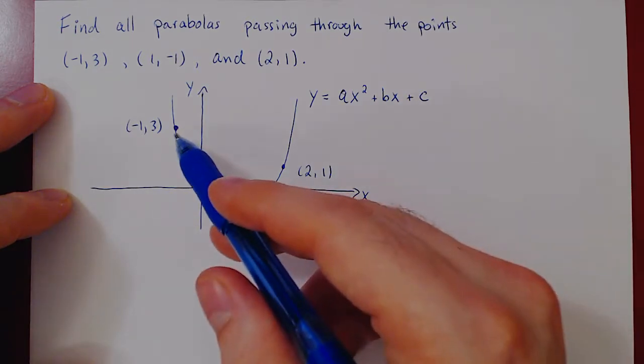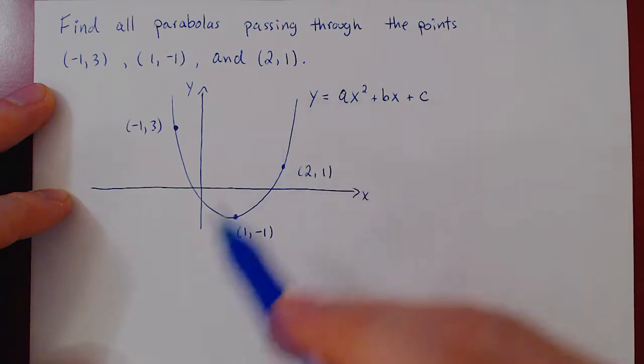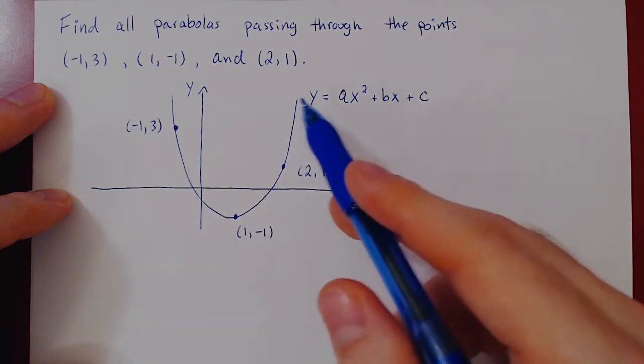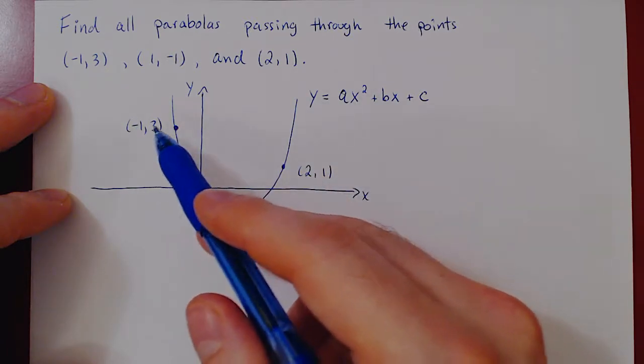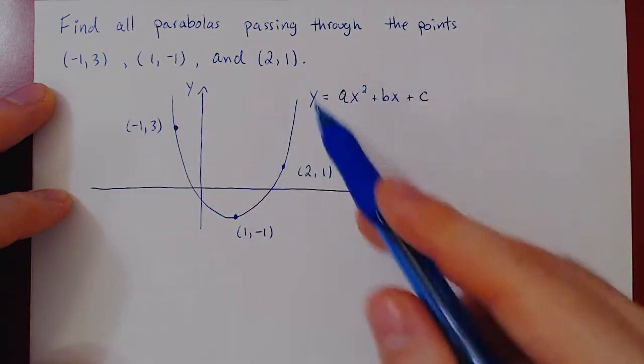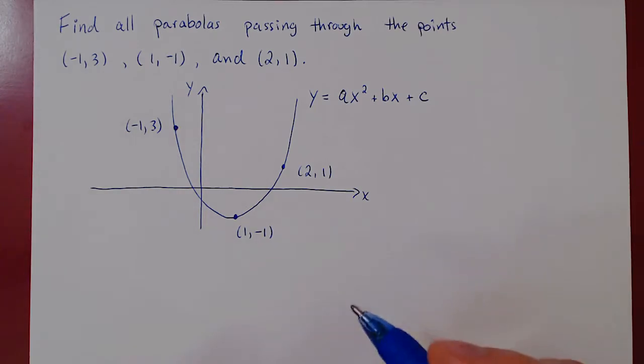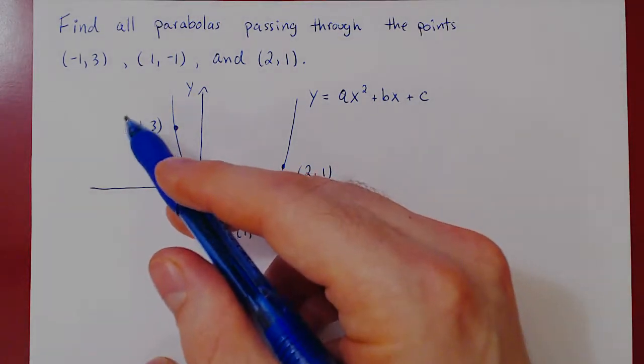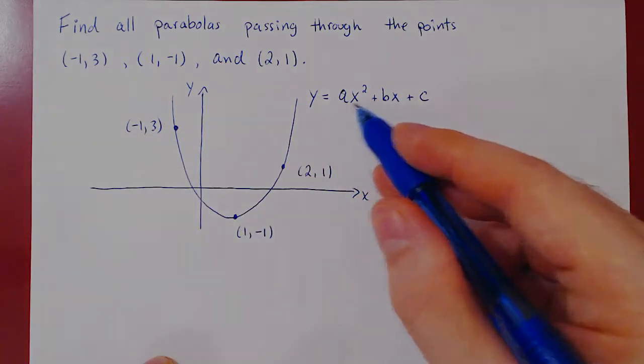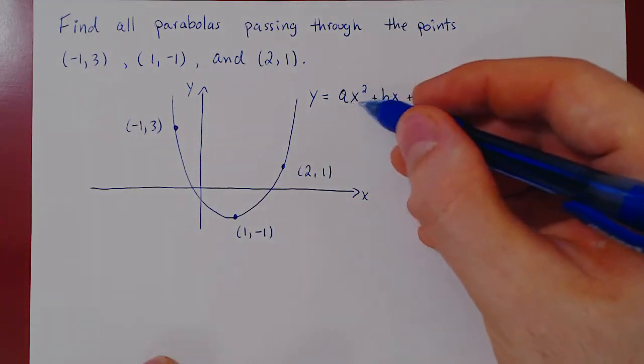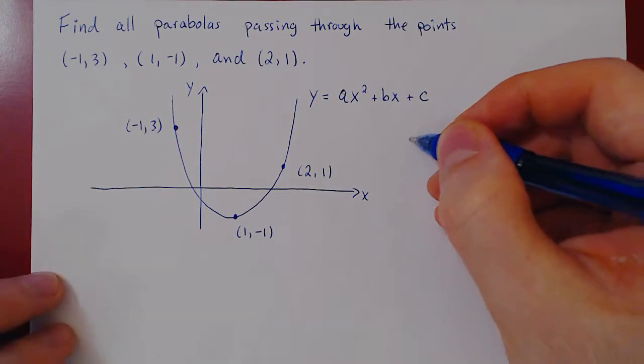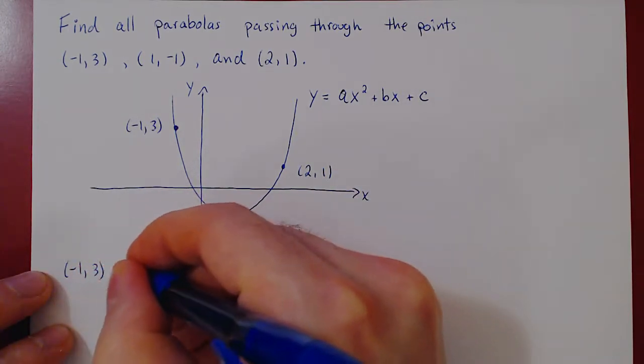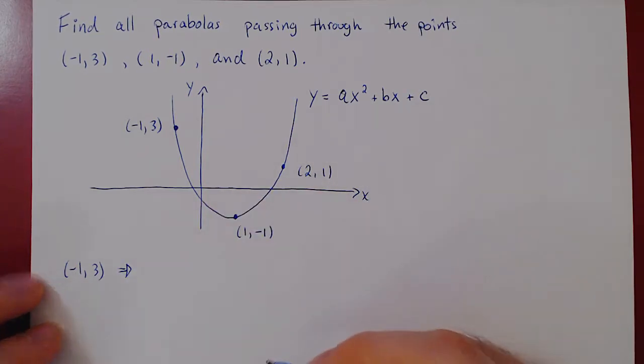A point is on the parabola if and only if it is a solution to the equation of the parabola. So the point negative one, three must be a solution of this equation, so we can replace. Let's replace x by negative one, and I'll write this first. So we'll have a times negative one squared, which is one. I can now write it here, so negative one, three. This point implies that we get the following equation.